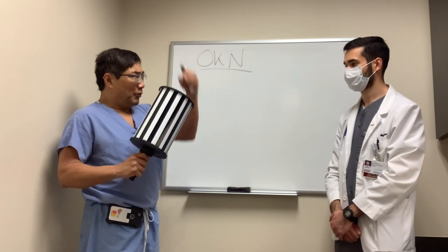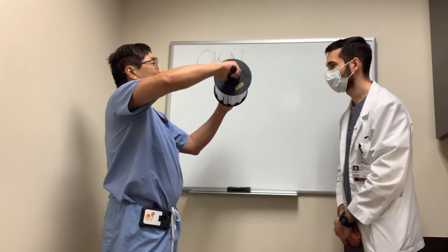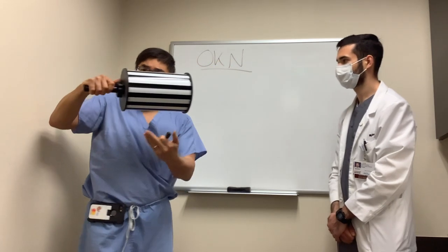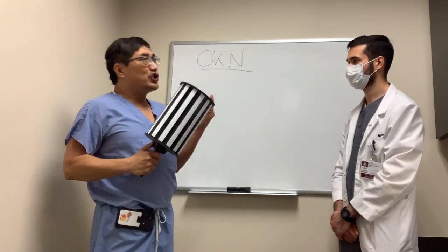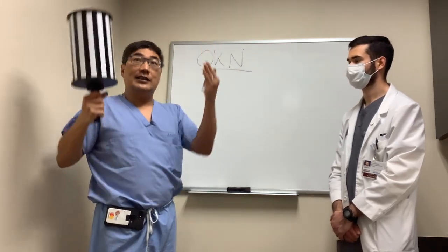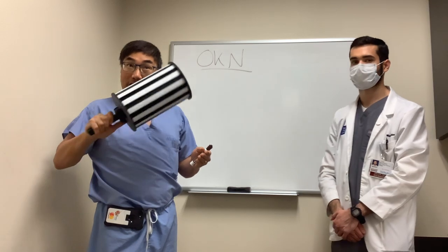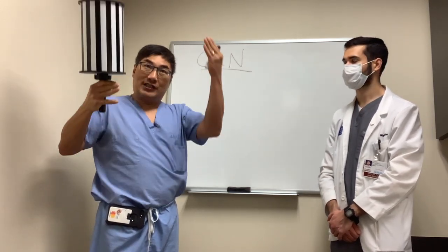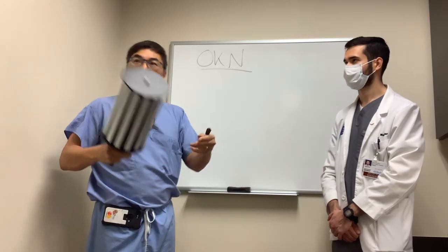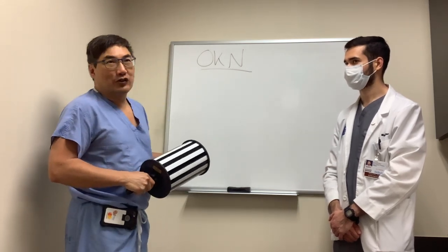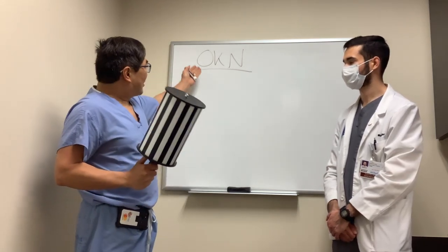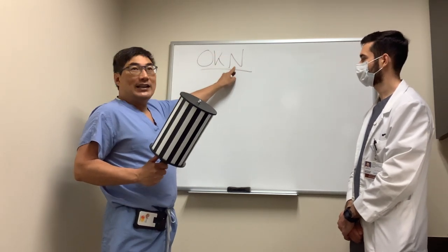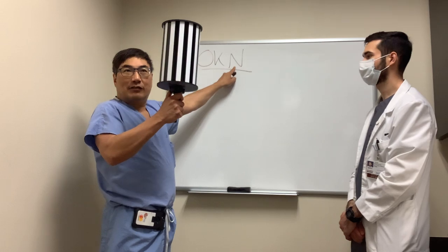Another efferent use is generating upward saccades. Matthew is looking down and will follow the target then saccade up. Spinning the drum downward generates upward saccades, which may induce a convergence retraction nystagmus in dorsal midbrain syndrome. So we can use the OKN drum spinning downward to elicit this response and help diagnose dorsal midbrain syndrome.